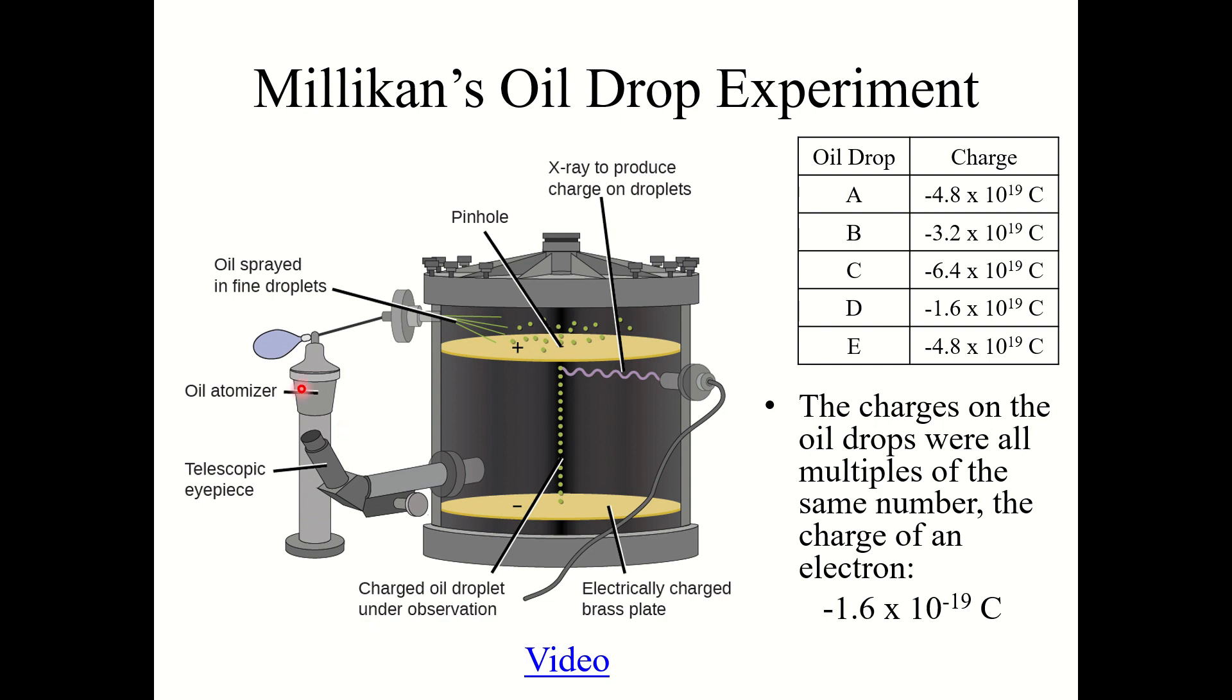So what Millikan did was he took oil, he put it inside this little sprayer right here, and it would spray oil in fine droplets into this tube right here or this large cylinder. So once the very fine oil droplets were inside this cylinder, he would use an x-ray and the x-ray would atomize these droplets. Essentially it would take these droplets and break them into small pieces and it would produce charge on the droplets. It would make the particles charged. So essentially it would knock electrons out and make those oil droplets charged.